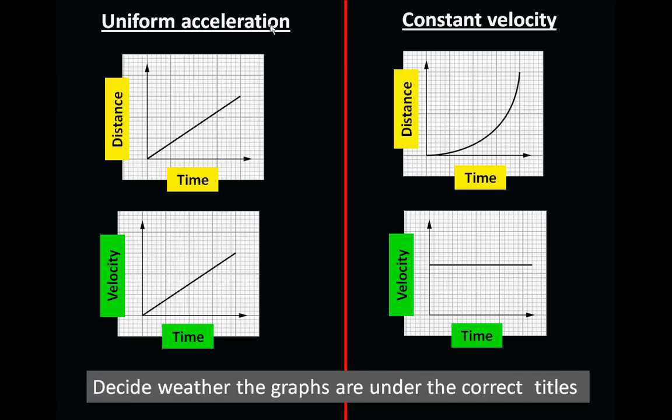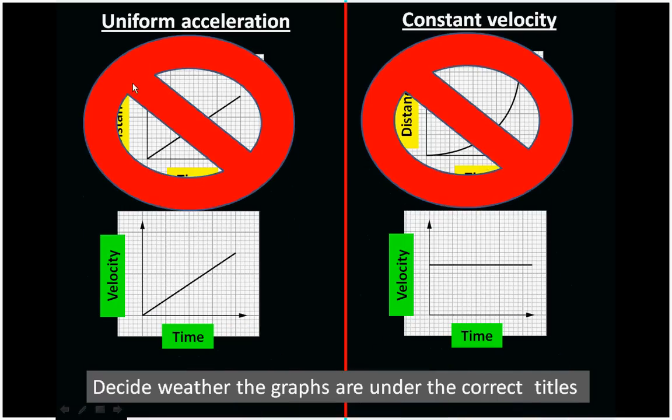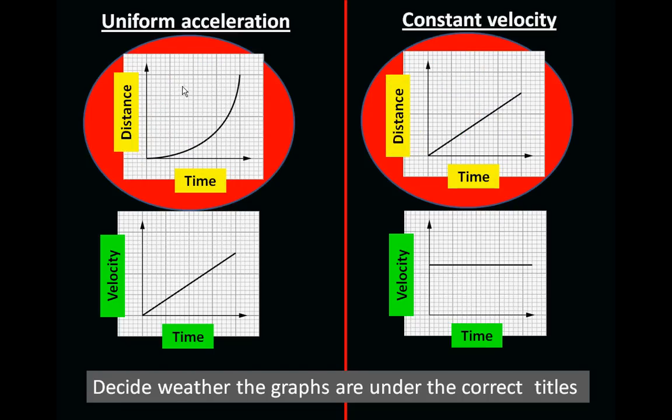If you've paused the video and had a good look, you should have noticed that these two were under the incorrect titles and they should have been this way around. We've got Uniform Acceleration on the left and Constant Velocity on the right. If you weren't able to do that, maybe it's a good idea to go back and review some of the previous videos.